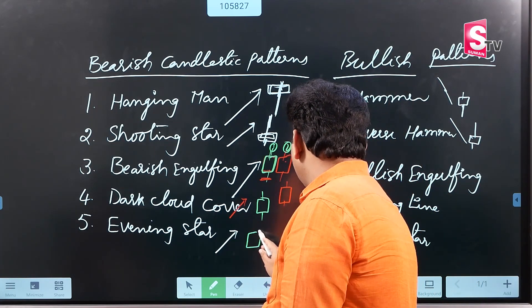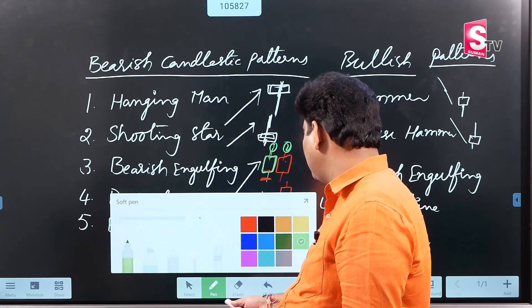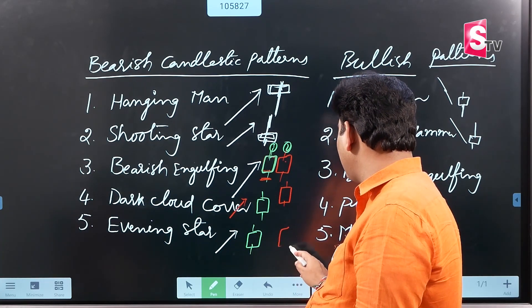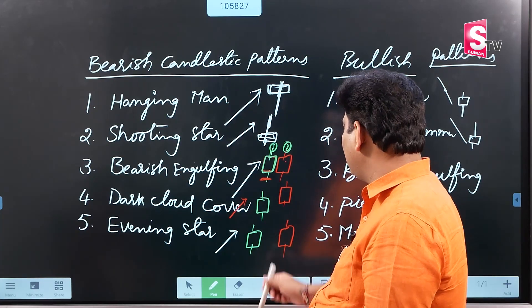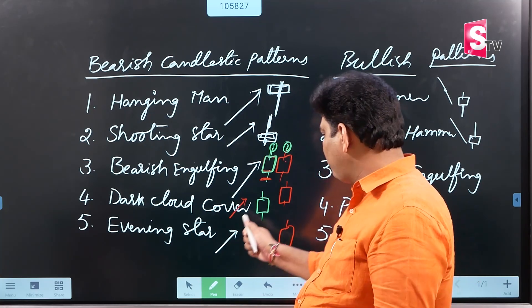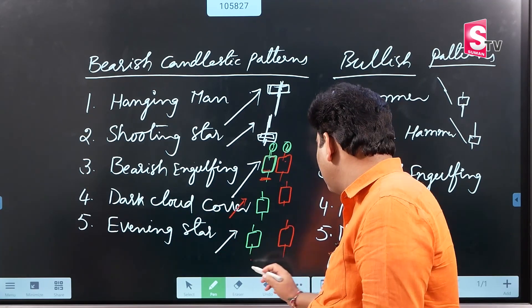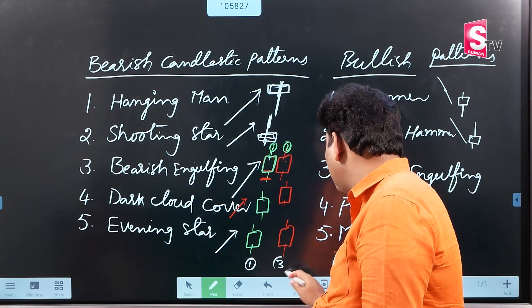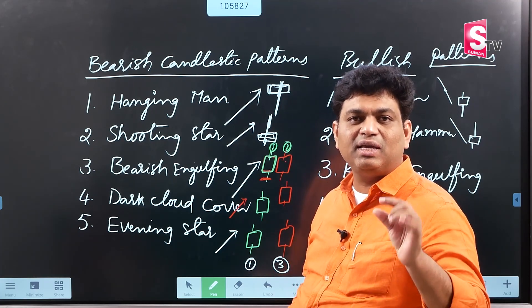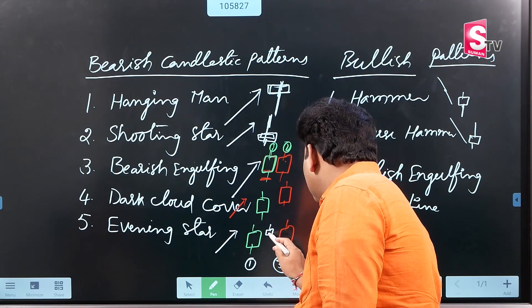The first candle is green and the third candle is red. The second candle in the middle is not as important in terms of color. The first candle has a real body, the third candle has a real body, and the second candle's real body is significantly smaller — we have a small real body in the middle.